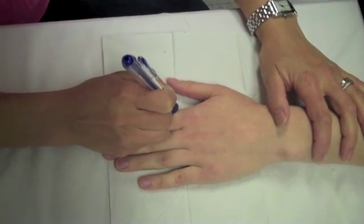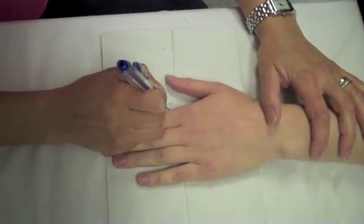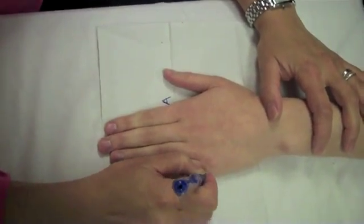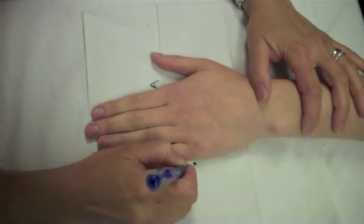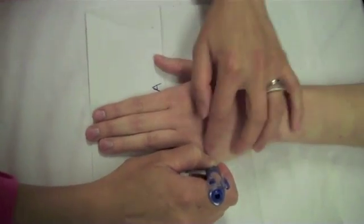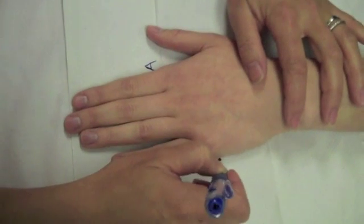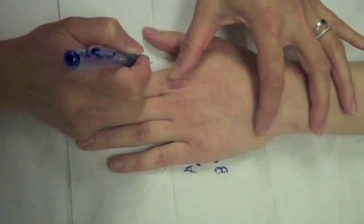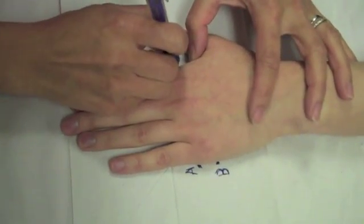Place the patient's hand palm down on a flat surface. Next, mark an A by the proximal end of the 2nd MCP joint. Mark another A by the proximal end of the 5th MCP joint. Then mark a B by the distal end of the 5th MCP joint and the distal end of the 2nd MCP joint.